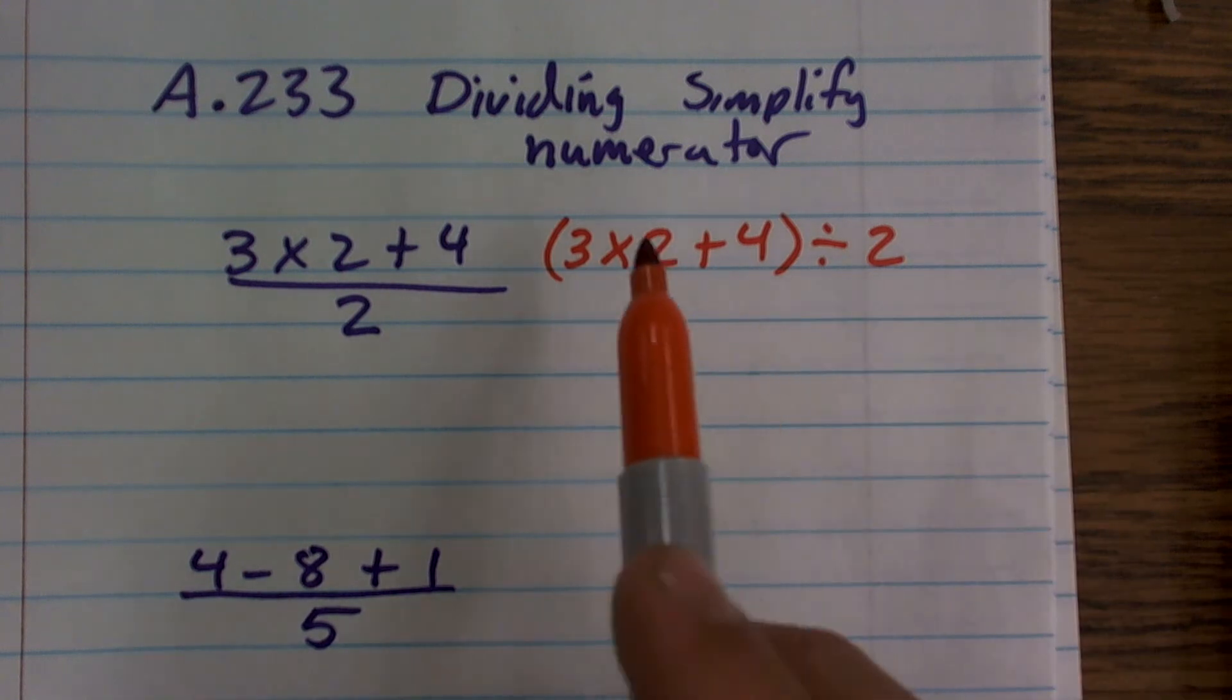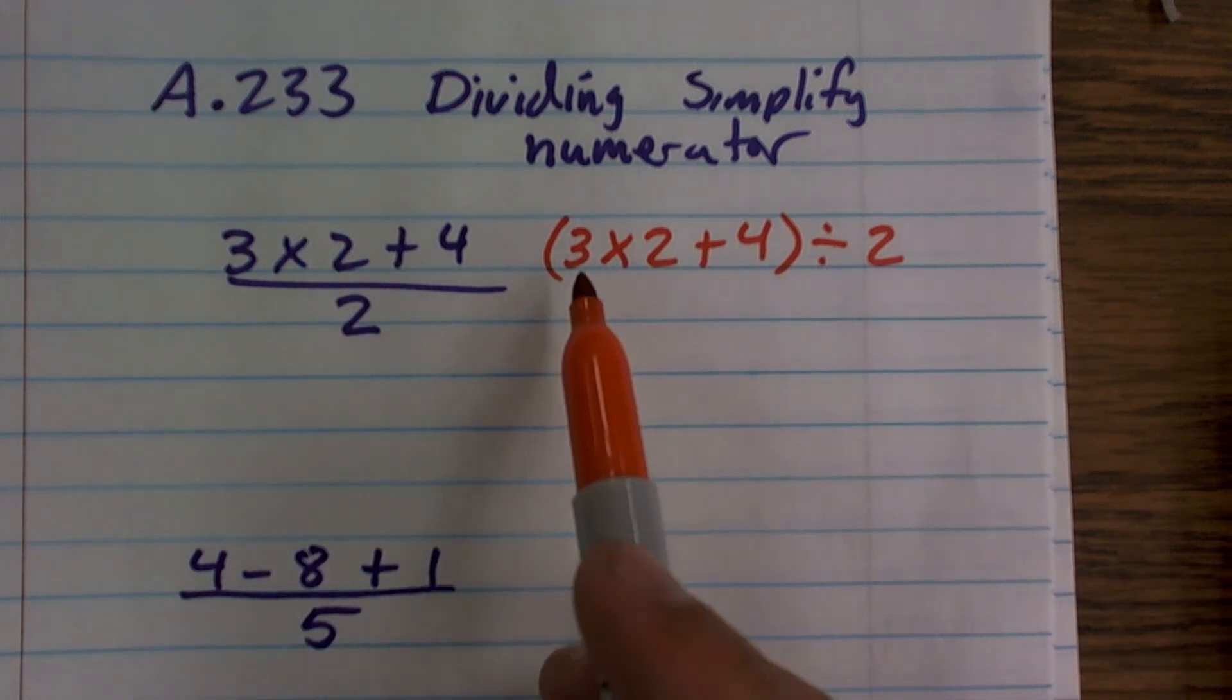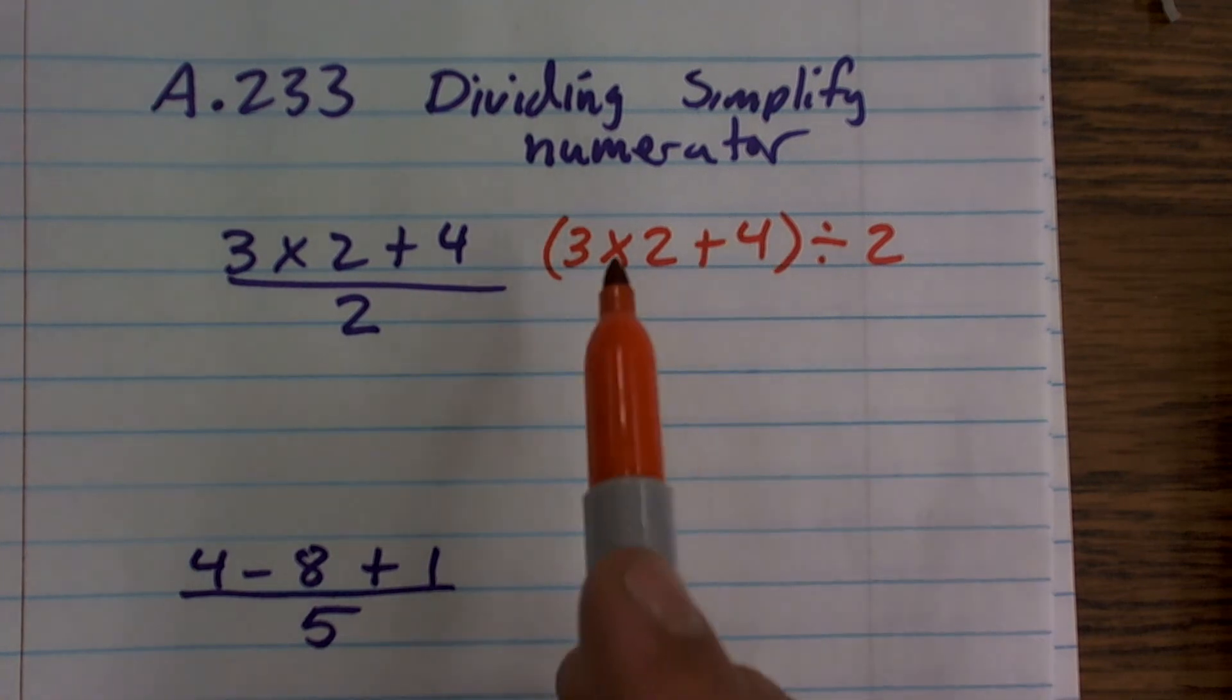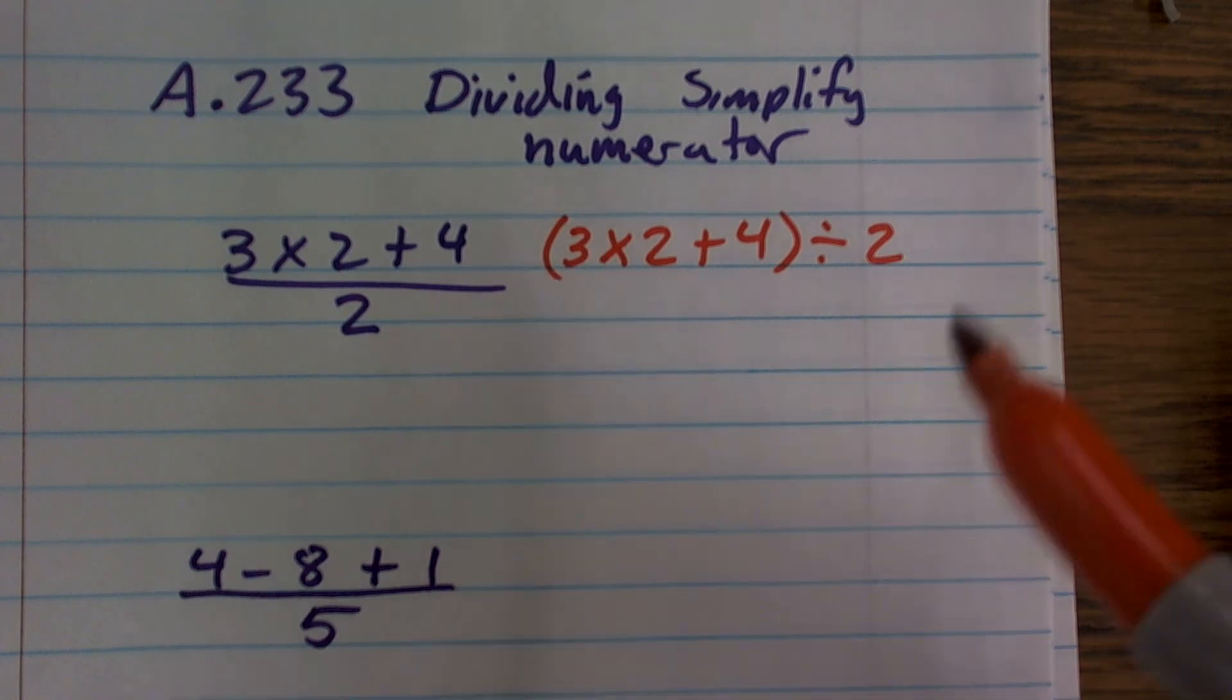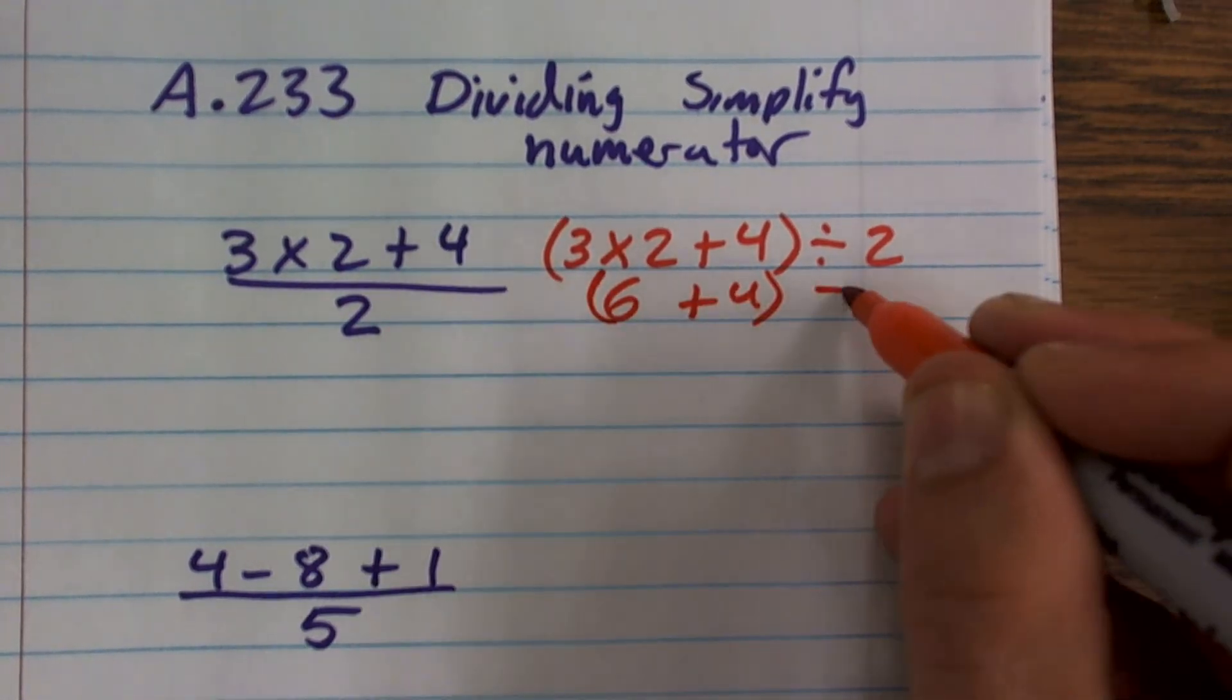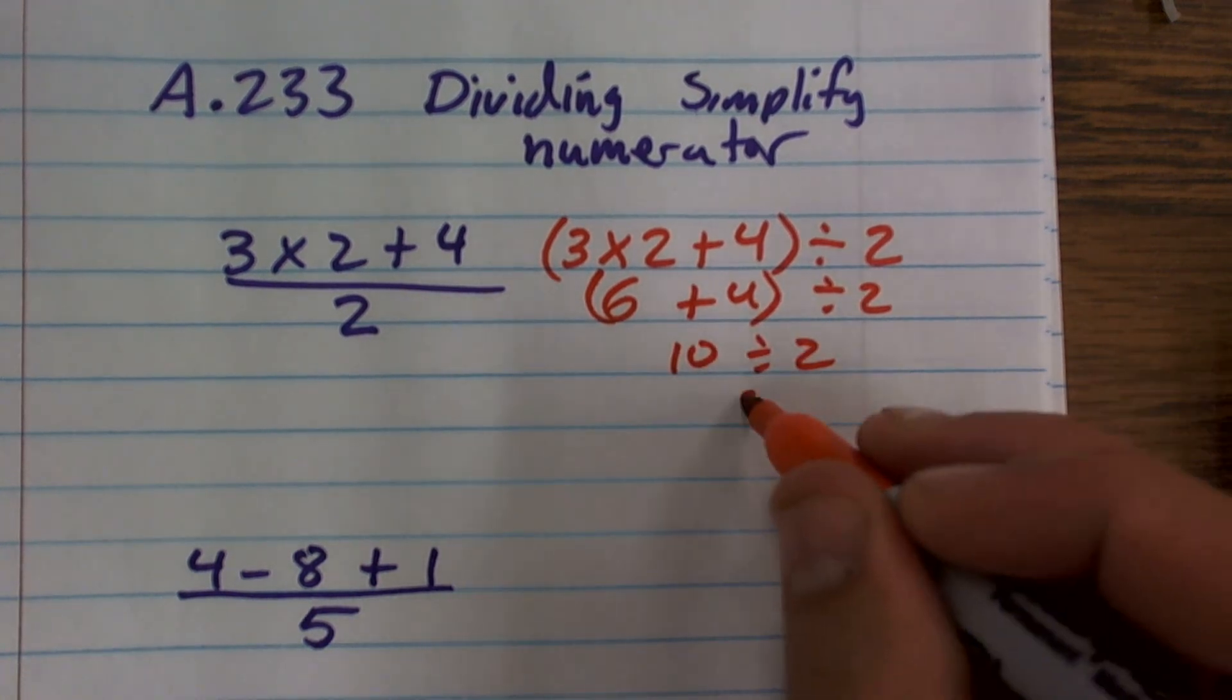So if I rewrite it like this by just taking my numerator, put it in parentheses, then divide it by 2, I use now my multiplication, and I use my order of operations. So I do multiplication first. 3 times 2 is 6, plus 4, divided by 2. 6 plus 4 is 10, divided by 2 is 5.